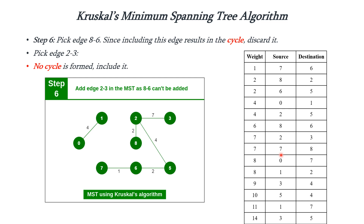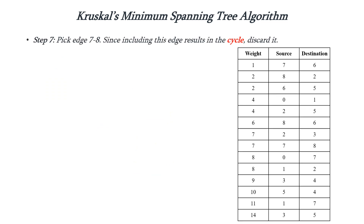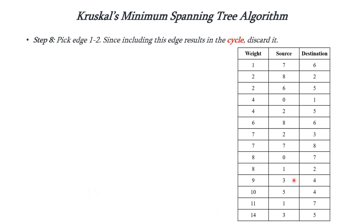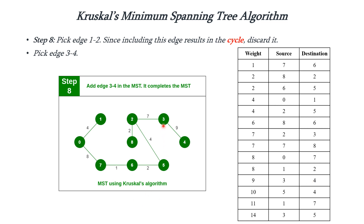Next we have source 7 and destination 8. If we connect these two it will form a cycle, so we discard it. Next in the row we have edge 0-7 with weight 8 — it is not forming any cycle, so we include it. Next we have source 1 and destination 2 — if we connect this it will form a cycle, so we discard it. Next we have source 3 and destination 4 with weight 9. We check whether it is forming a cycle — it is not, so we include it.